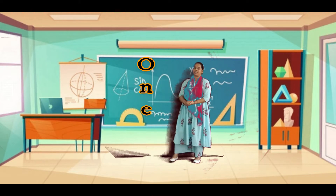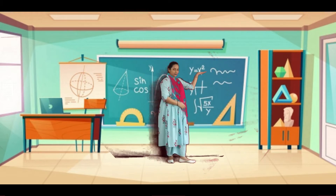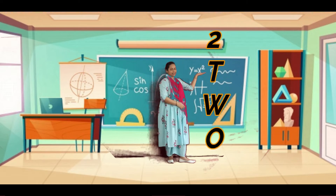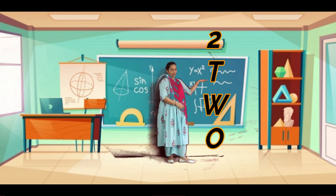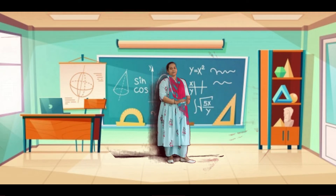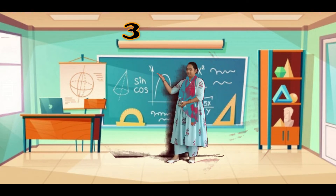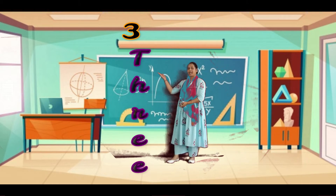Now see here, number Two. Two is spelling children: T, W, O.